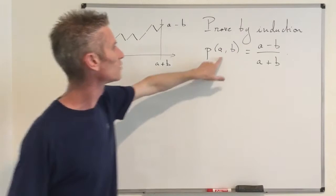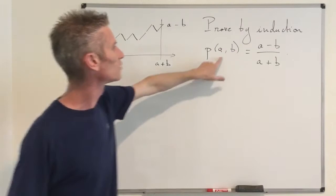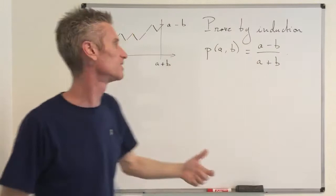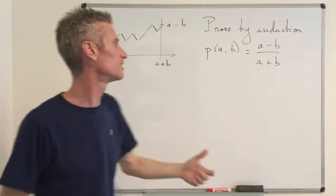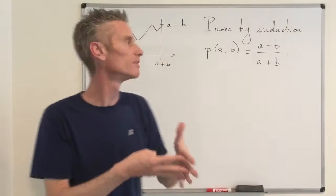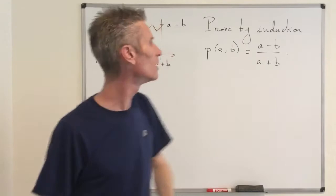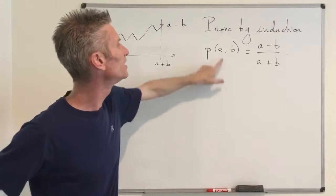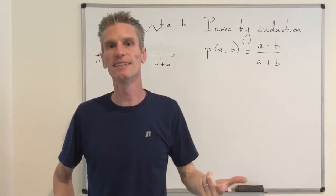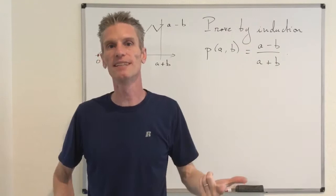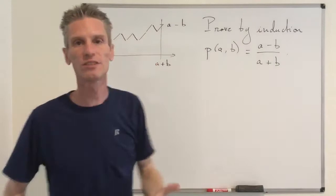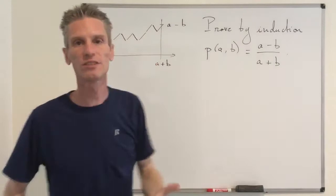To prove this by induction, the first step is to verify it when a plus b equals 1. We are doing induction on a plus b, the total number of voters. If you have only one voter, the only possibility is a equals 1 and b equals 0, since A wins. In this case (a minus b)/(a plus b) equals 1/1 equals 1. Indeed, if there is only one vote and A wins, then clearly A is always ahead of B — that's the only possibility.